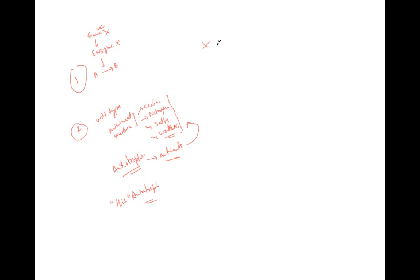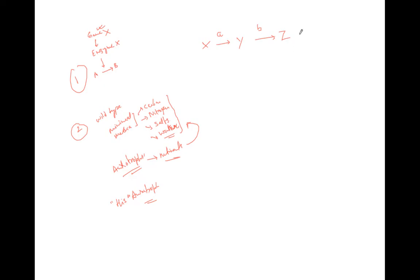Let's look at a biochemical pathway. Suppose there is a substrate X which is transformed into Y, and Y is transformed into Z. These transformations require enzyme A and enzyme B respectively. If there is a mutation in enzyme A, the pathway will not be functional.